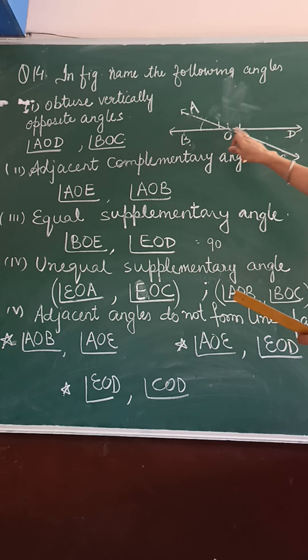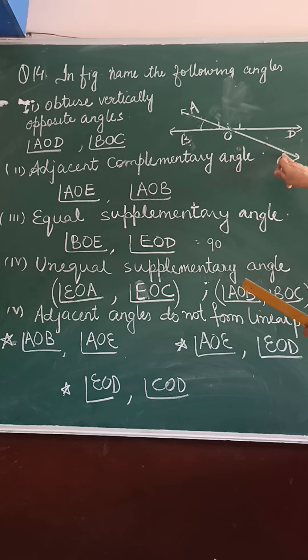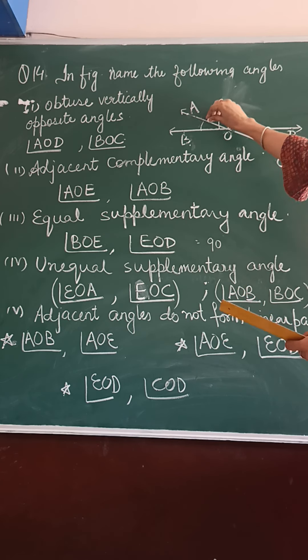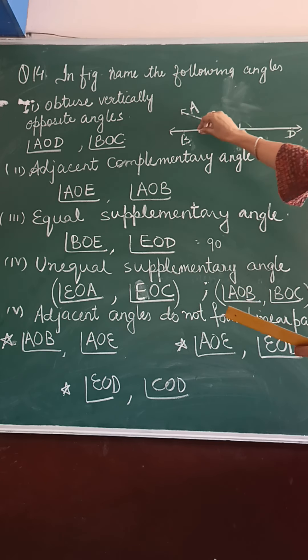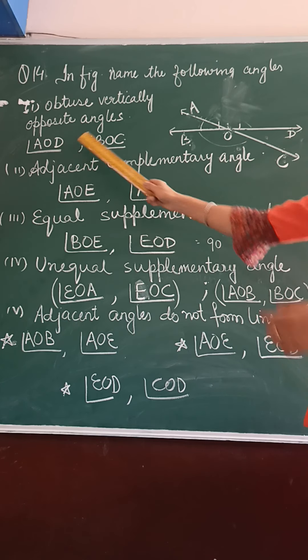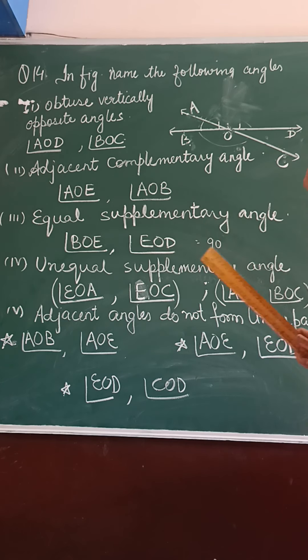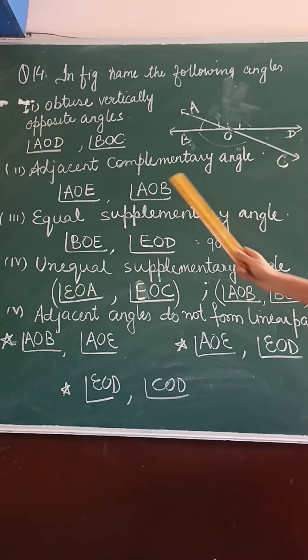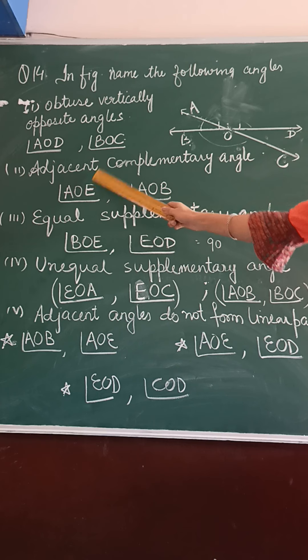Then A, O, D and D, O, C — these are obtuse vertical opposite angles. So, A, O, D and D, O, C are vertical opposite angles. That completes the first part.